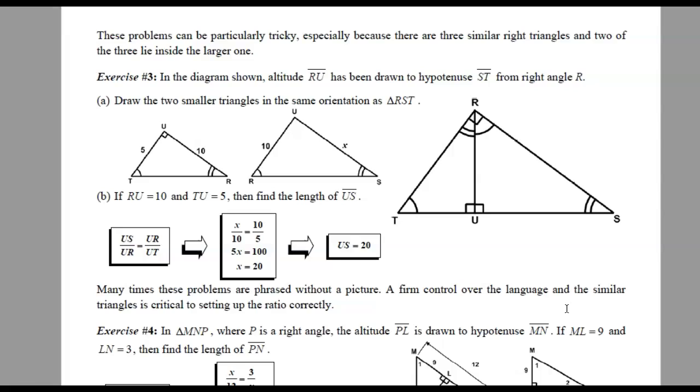All right. On the next page, these problems can be a little bit tricky because there are three similar right triangles and two of them lie inside one. So like I said before, it's a little tricky visually unless you separate them. So it's always a good idea as your first step to redraw the two smaller triangles to look like the bigger one. So if the right angle is on the top, redraw them so the right angles are on the top. And that's how this has been done. So in part B, if RU is 10, you can put that right into the big diagram and also into the two small ones. TU equals 5. Again, put it wherever you see a TU. So that would be here on the large diagram. And it would be here on the small one. And I want to find the length of US.